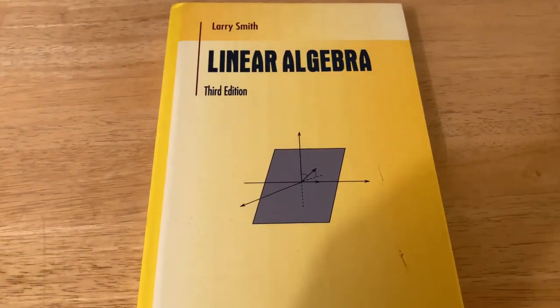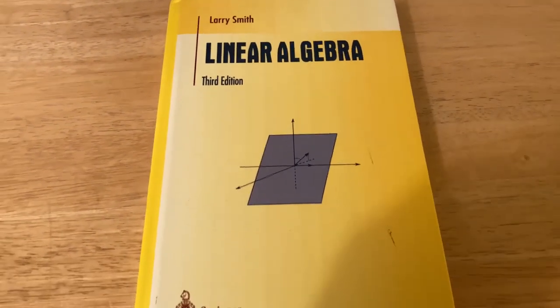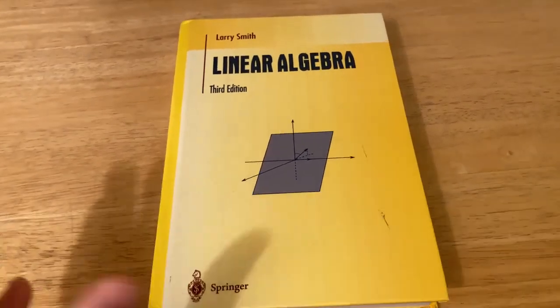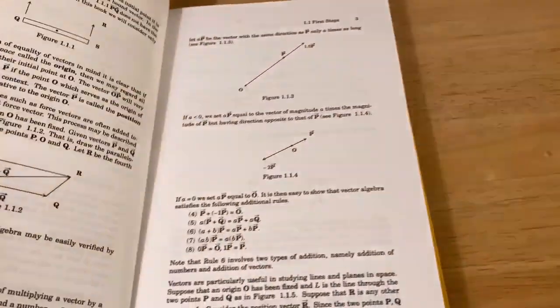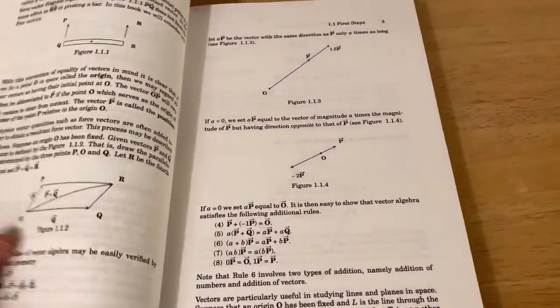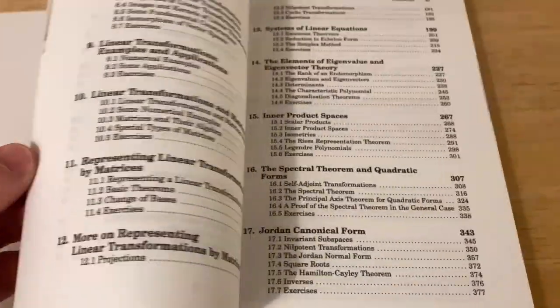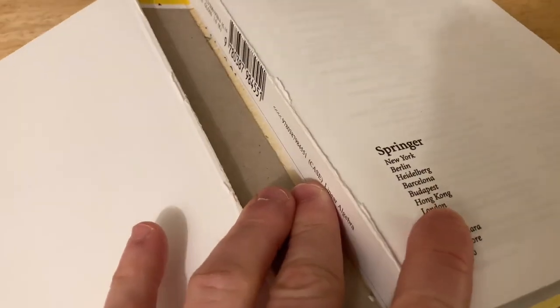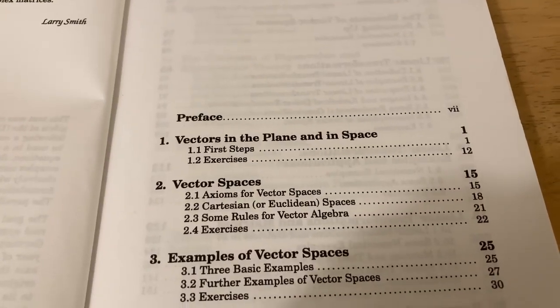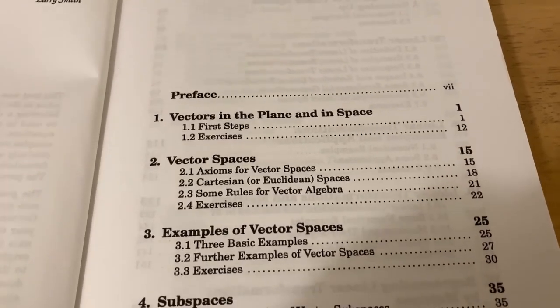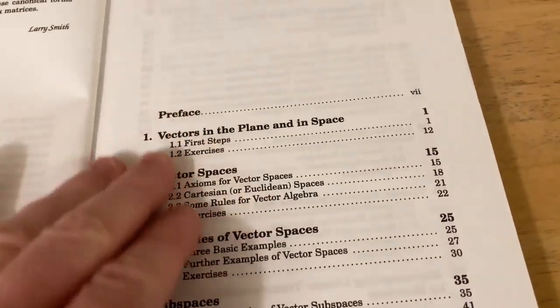The first one here is Linear Algebra by Larry Smith. Linear algebra is typically a class that you take after taking some calculus, and it's not a particularly difficult class normally. The biggest problem with this particular book is that my copy is falling apart. I bought a used copy and this is what I got. These are the contents and it starts off at a really good pace.